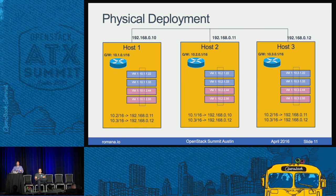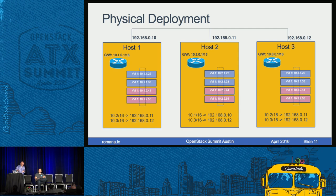Romana chooses the IP address knowing the host, segment, and tenant, bringing up the endpoint while maintaining the route hierarchy. Routes added by the Romana route controller build in reachability to a /16, so when a new endpoint comes up, nothing else has to change. There's no BGP, no XMPP, no VRFs, no tunnels, no VTEPs — all that complexity dissolves away.